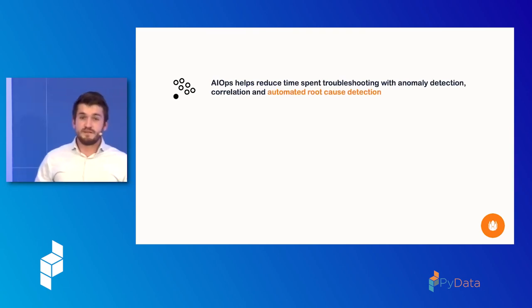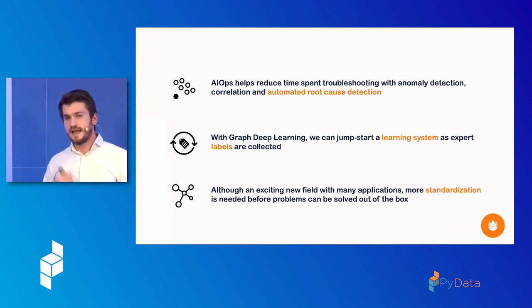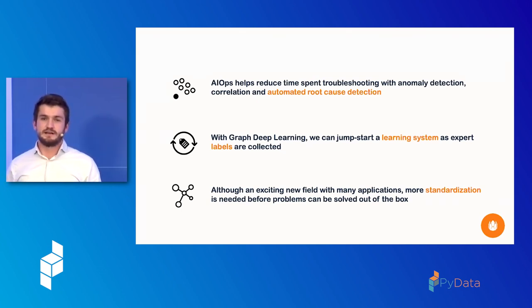All right, to conclude. So I hope I convinced you today that with AIOps, we can help reduce the time spent troubleshooting using stuff like anomaly detection, correlation, and automated root cause detection. With graph deep learning, if we set it up in a proper way, we can jumpstart learning system as we collect labels. And yeah, some notes on this field in general, I think it's a very exciting field with many applications. There's a lot more standardization going to be needed before you can really solve problems out of the box. So let's make sure we keep a distance for the last part of the conference, right, Dennis? Yes. Yeah.